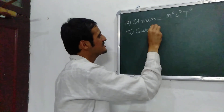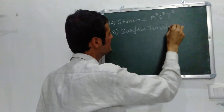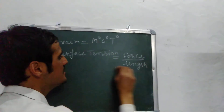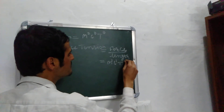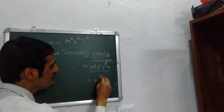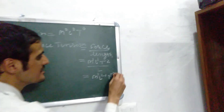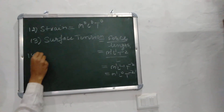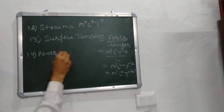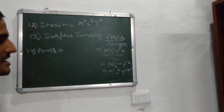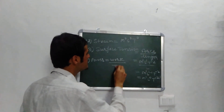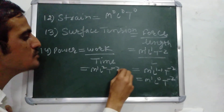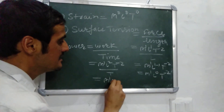Next we talk about surface tension. The dimensional formula of surface tension is M1 L0 T-2.